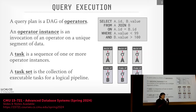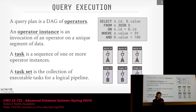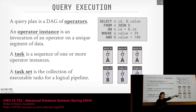A worker is used generically — you can think of it as a core, a thread, a process, or a node. The scheduler also needs to track where the data workers need to access is coming from, and where intermediate results they generate will go.